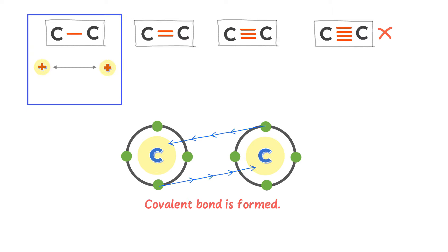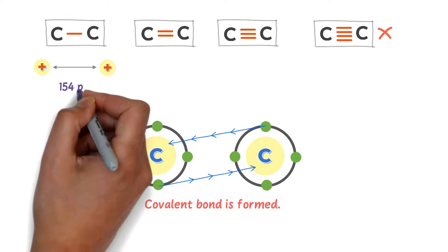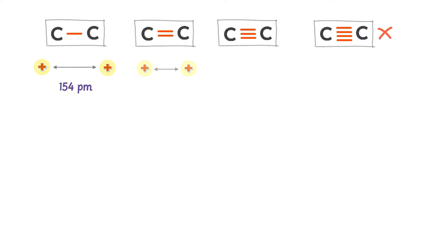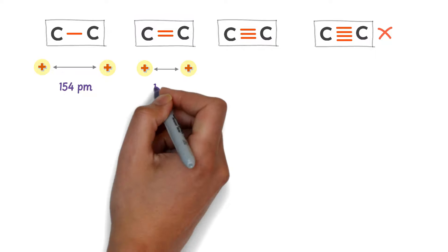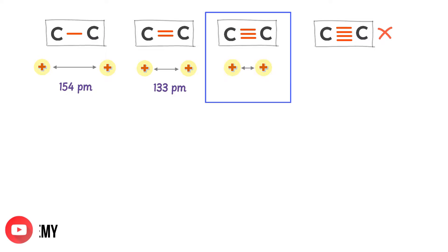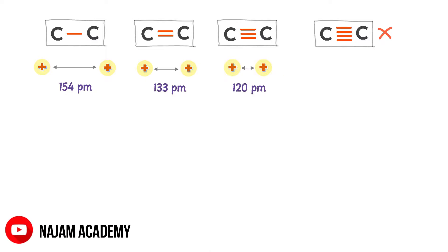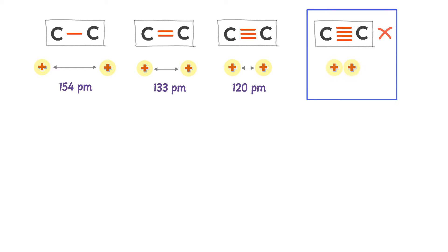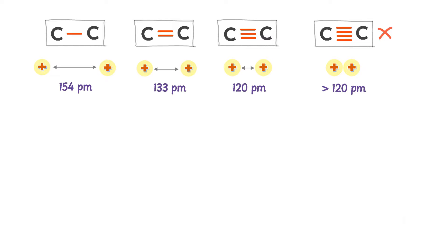In a single carbon–carbon bond, the distance between the two nuclei is 154 picometers. In a double carbon–carbon bond, it is 133 picometers. In a triple carbon–carbon bond, it is 120 picometers. In the case of a hypothetical four-bond (quadruple bond), the distance between the two nuclei would be less than 120 picometers.